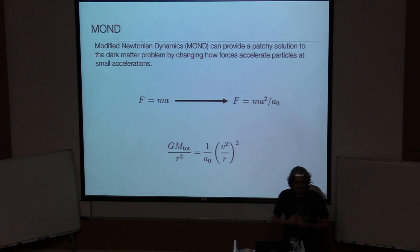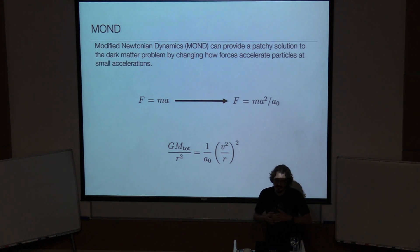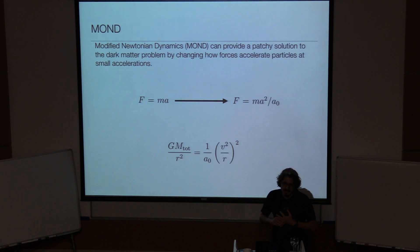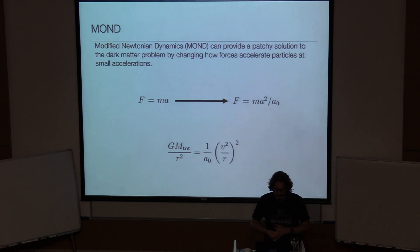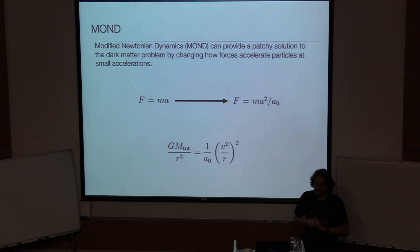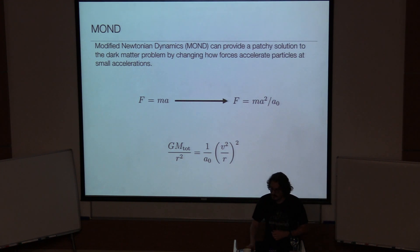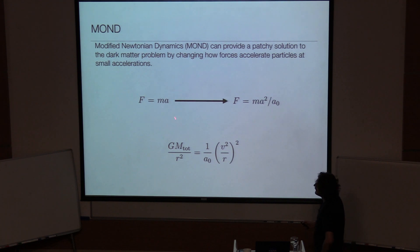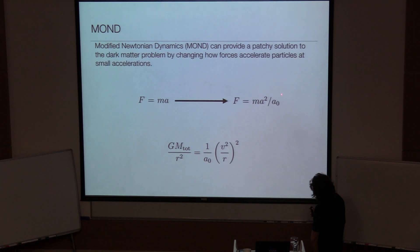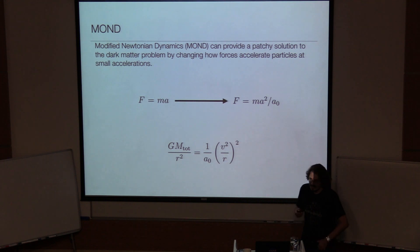There's not a single model that does this, but rather a family of models, some of which are relativistic, some are not. The initial idea was put forward by Milgrom. The idea is to modify Newtonian dynamics at very small accelerations. You already know F equals ma from Newtonian mechanics. You can change this behavior to F equals ma² over some acceleration scale when you go to small acceleration.